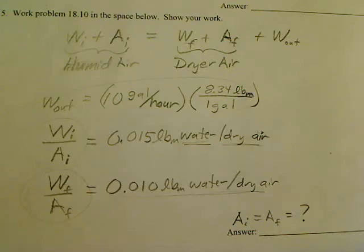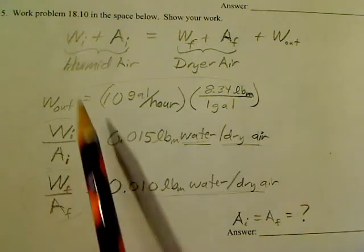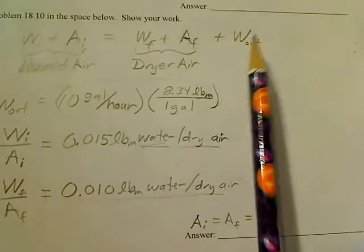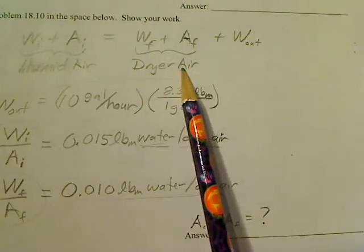This is problem 18.10, which is similar to 18.14. In this problem you have an air conditioner that takes in humid air and separates it through a process of condensation into water and drier air.